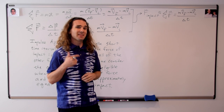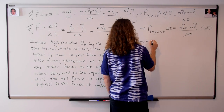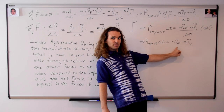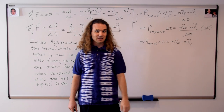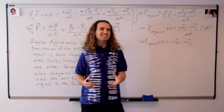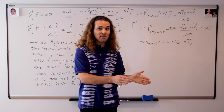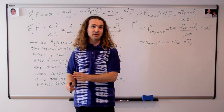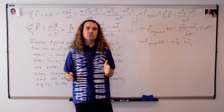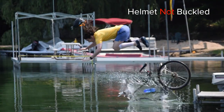Lastly, let's multiply both sides by the change in time. Now we end up with the force of impact times the change in time equals the mass times velocity final, minus mass times velocity initial. I want to start with just the right-hand side of the equation and discuss how these variables change depending on whether I'm wearing my helmet or not, specifically whether I buckled the helmet strap or did not buckle the helmet strap.